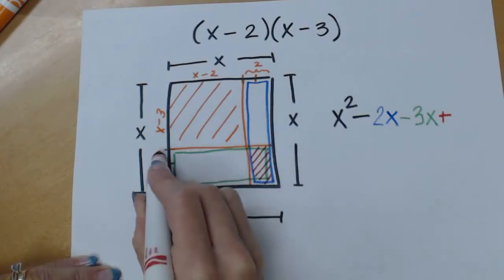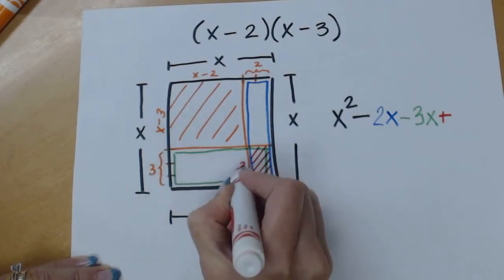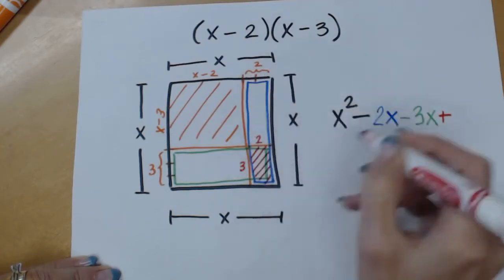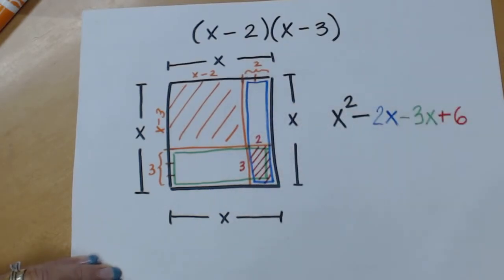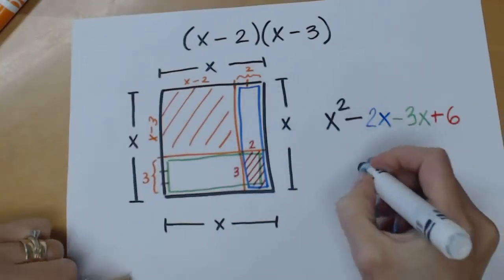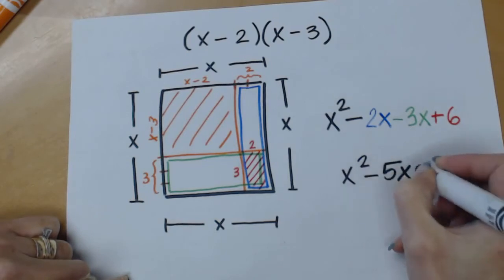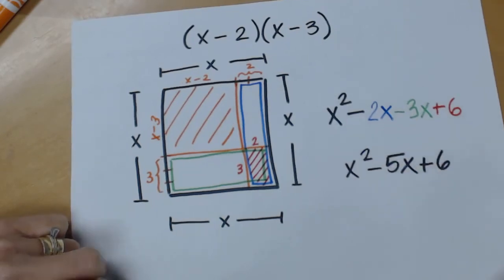So to figure out the area of this we can see that one side is a 3 and we can see that the other length is a 2. So we're going to add 6 back. If we now combine our like terms we end up with our answer which is x squared minus 5x plus 6.